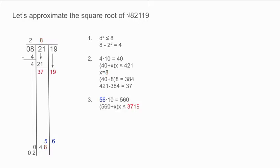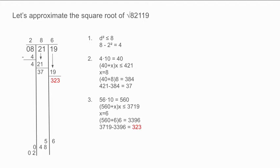Bring down the 19. Now we will find the third part of our integer. First, multiply the 56 by 10. Then find the largest x so that 560 plus x times x is less than or equal to 3719. The number we are looking for is 6. 560 plus 6 times 6 is equal to 3396. Write 6 above the columns. Subtract 3719 minus 3396 which is equal to 323. Write 323 in the right hand column. Bring the 6 down to the bottom beside the 56.